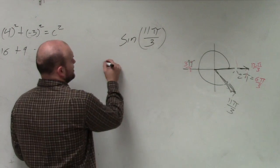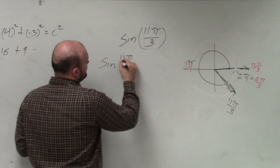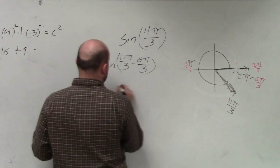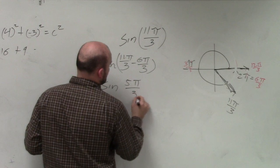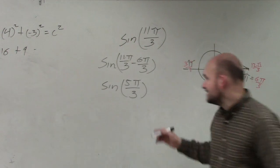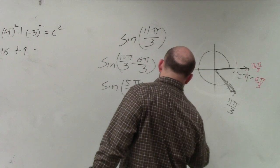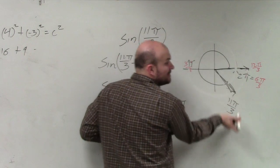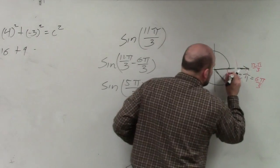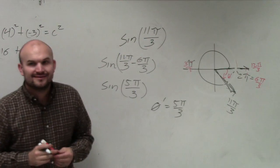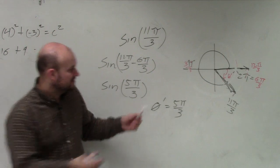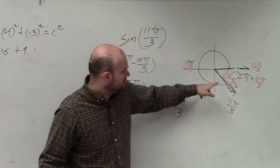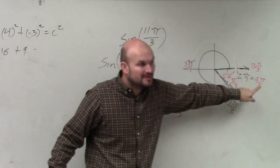So if I take sine of 11 pi over 3 minus 6 pi over 3 — which is 2 pi — that gives me sine of 5 pi over 3. So we can say theta is 5 pi over 3. Think about this in terms of reference angles: if theta is 5 pi over 3, and all the way around is 6 pi over 3, the reference angle has to be pi over 3. Because 5 pi over 3 plus pi over 3 gives you 6 pi over 3.